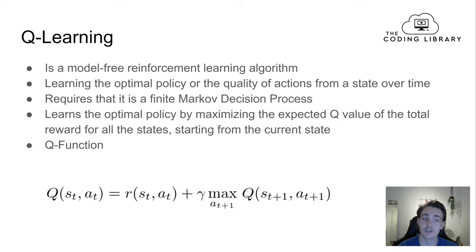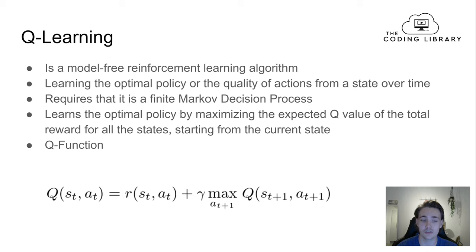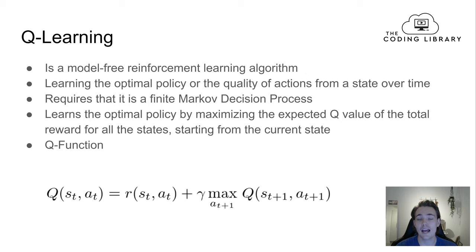Q-learning is a model-free reinforcement learning algorithm, meaning we don't need a fully determined model — we can just place our agent in the environment and have it explore. Q-learning tries to learn the optimal policy, or the quality of actions from a given state, over time. It also requires a finite Markov decision process with the Markov property, meaning actions depend only on the current state, not previous states.